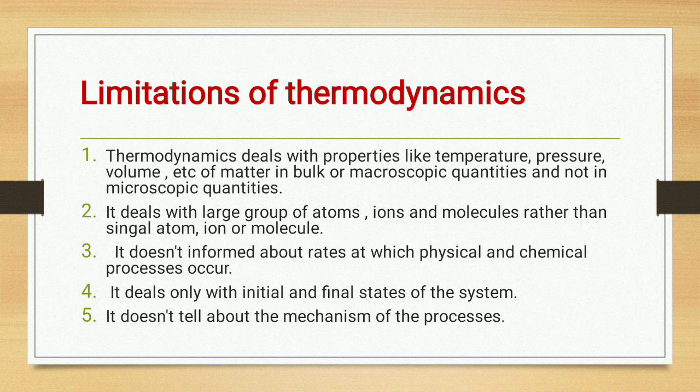Thermodynamics gives the quantity of any matter's properties — like how many degrees of temperature, how many atmospheres of pressure, how many units of volume. But it only tells us about the properties of large groups of atoms; it does not deal with any single atom or ion. The second limitation: it deals with large groups of atoms, ions, and molecules rather than a single atom, ion, or molecule.